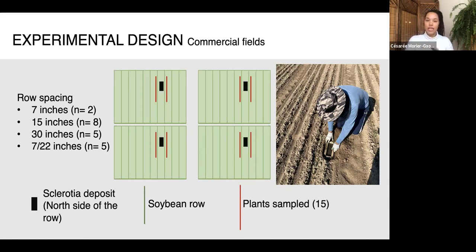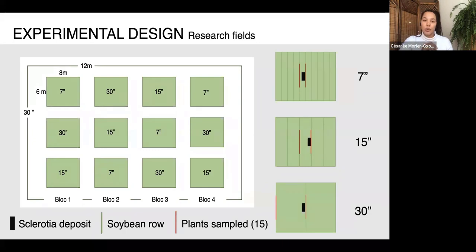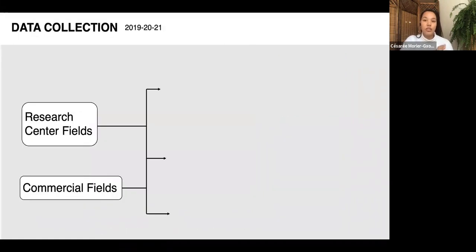Producers use different row spacings — seven, fifteen, and thirty inches, and some use twin rows. At the research fields we have more control, so we test three row spacings: 7, 15, and 30 inches, with each randomly allocated to experimental plots replicated four times, giving 12 experimental plots per research location. Similarly, a sclerotia deposit is buried between two soybean rows at each plot.